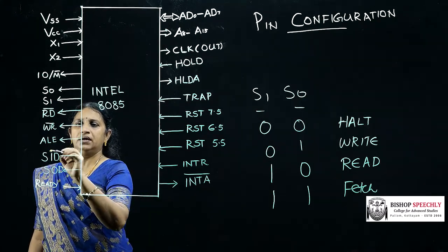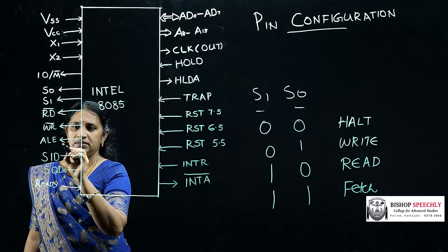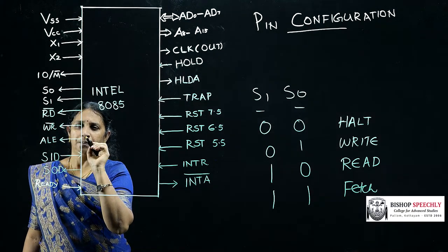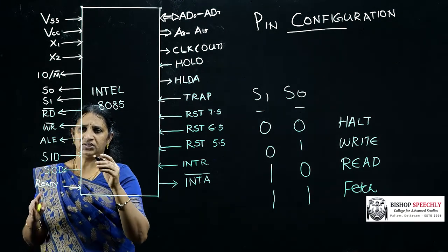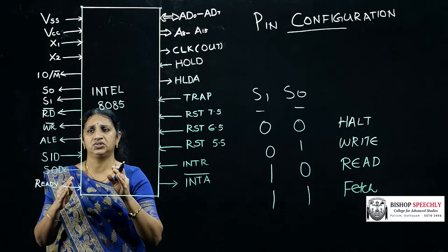The next pin is ALE. ALE means address latch enable. This signal issues a high value during the first clock cycle.